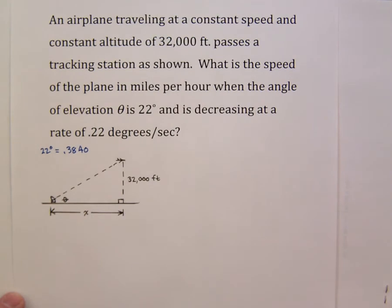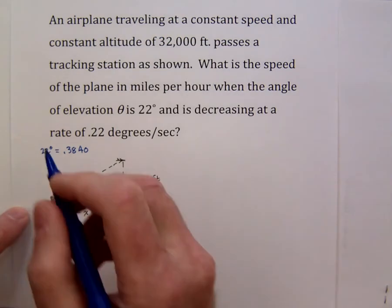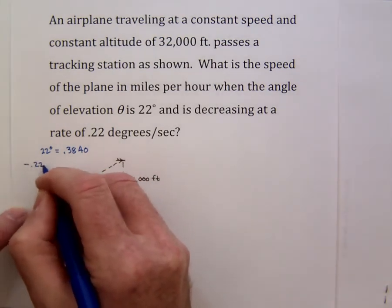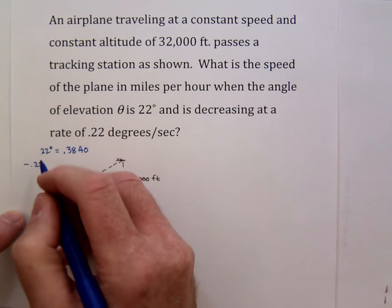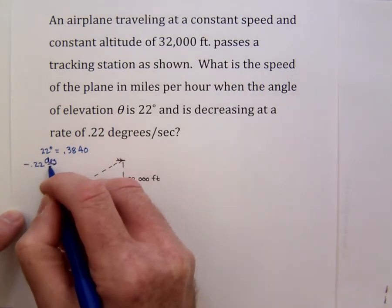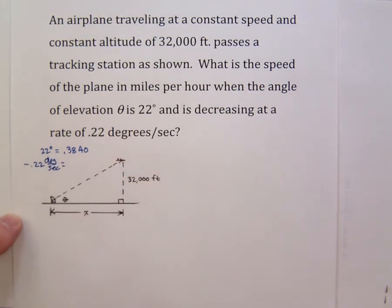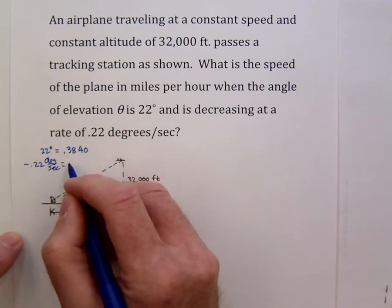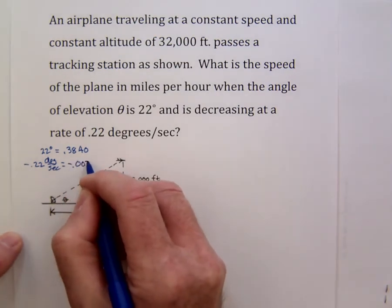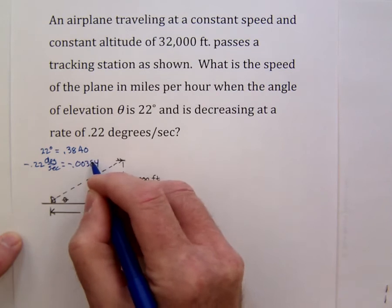And we also want to convert the 0.22 degrees per second, which is actually negative because it's decreasing. We want to convert that into radians per second. If we multiply by the appropriate pi over 180 we find that negative 0.22 degrees per second is about negative 0.00384 radians per second.